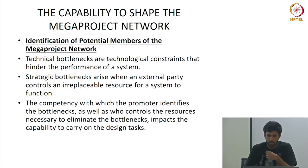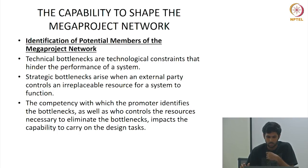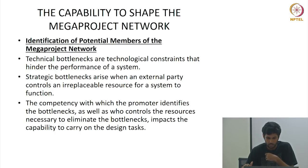The capability to shape mega projects — the identification of potential members of the mega project network involves identifying technical bottlenecks or technical constraints that hinder the performance of a system. Strategic bottlenecks arise when an external party controls an irreplaceable resource for the system to function. The competency with which the promoter identifies the bottleneck, as well as who controls the resources necessary to eliminate the bottlenecks, impacts the capability to carry on the design task.